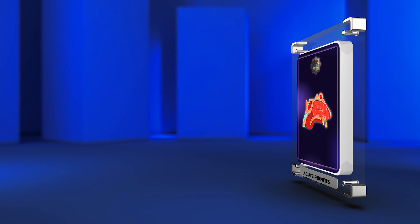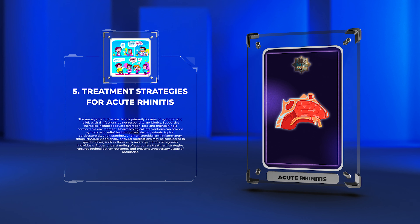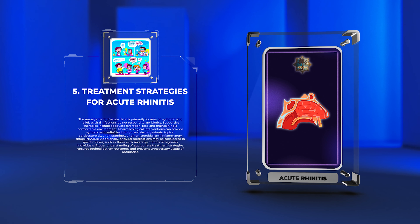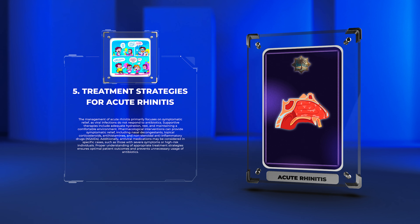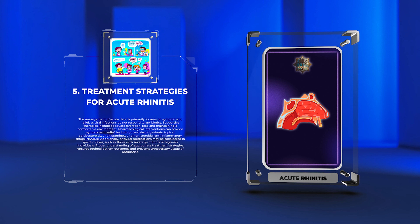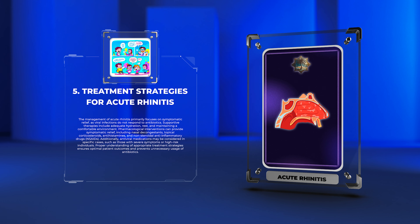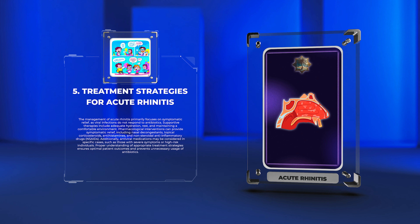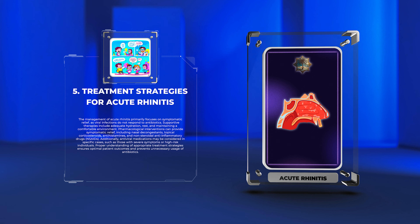The management of acute rhinitis primarily focuses on symptomatic relief, as viral infections do not respond to antibiotics. Supportive therapies include adequate hydration, rest, and maintaining a comfortable environment. Pharmacological interventions can provide symptomatic relief, including nasal decongestants, topical corticosteroids, antihistamines, and nonsteroidal anti-inflammatory drugs (NSAIDs). Additionally, antiviral medications may be considered in specific cases, such as those with severe symptoms or high-risk individuals. Proper understanding of appropriate treatment strategies ensures optimal patient outcomes and prevents unnecessary usage of antibiotics.